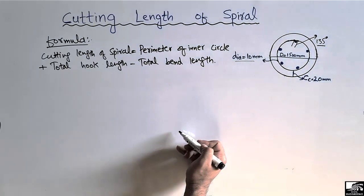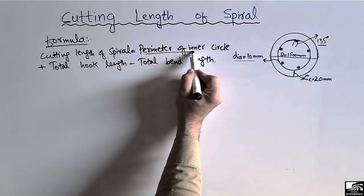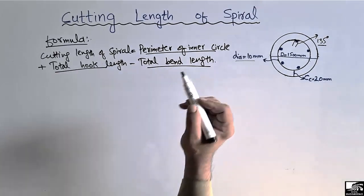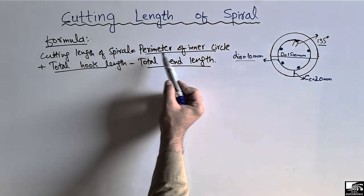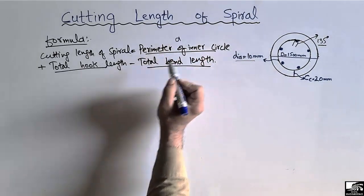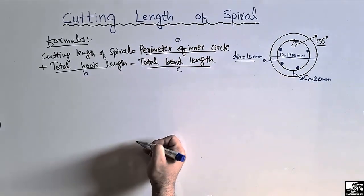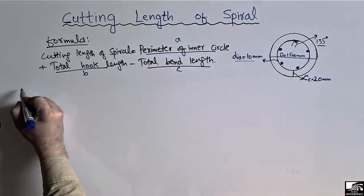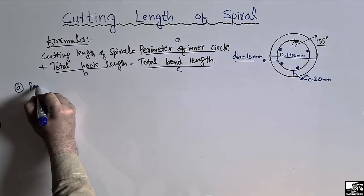There are three unknowns: the perimeter of the inner circle (A), the total hook length (B), and the total bend length (C). We will find each one by one. The first unknown is the perimeter of the inner circle, represented by A.